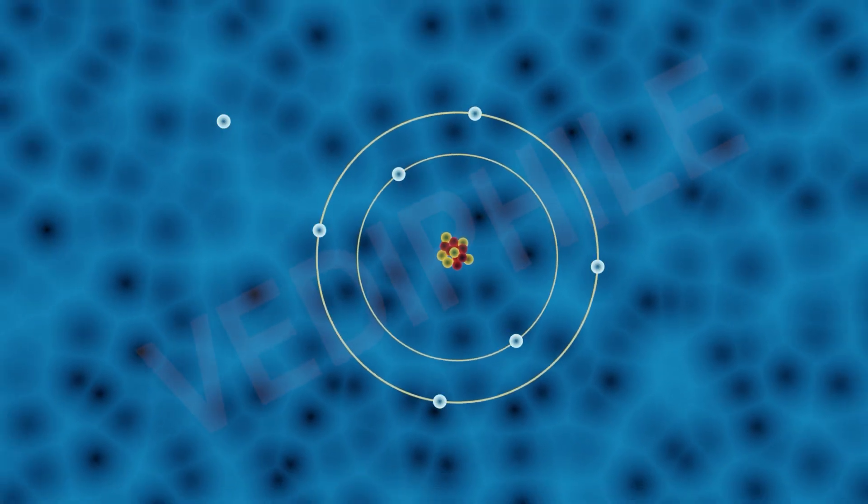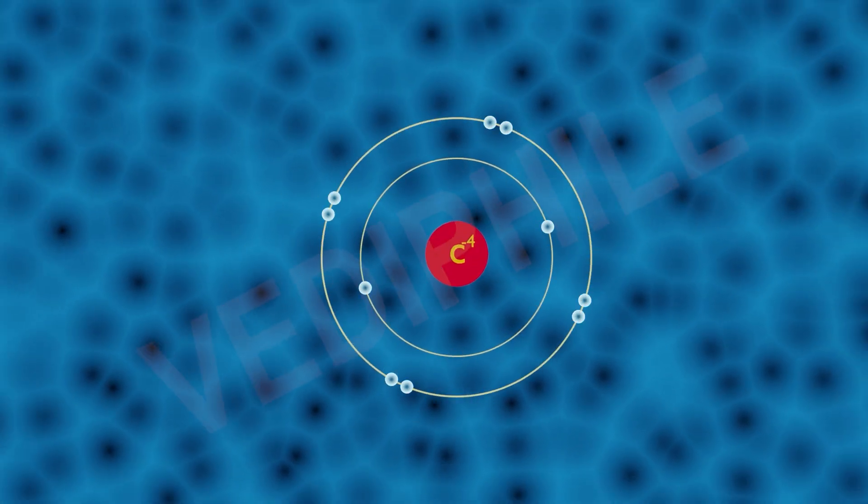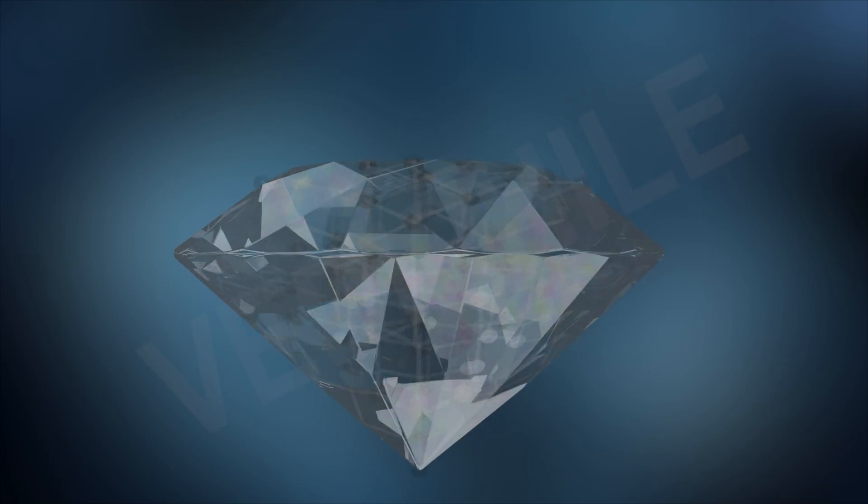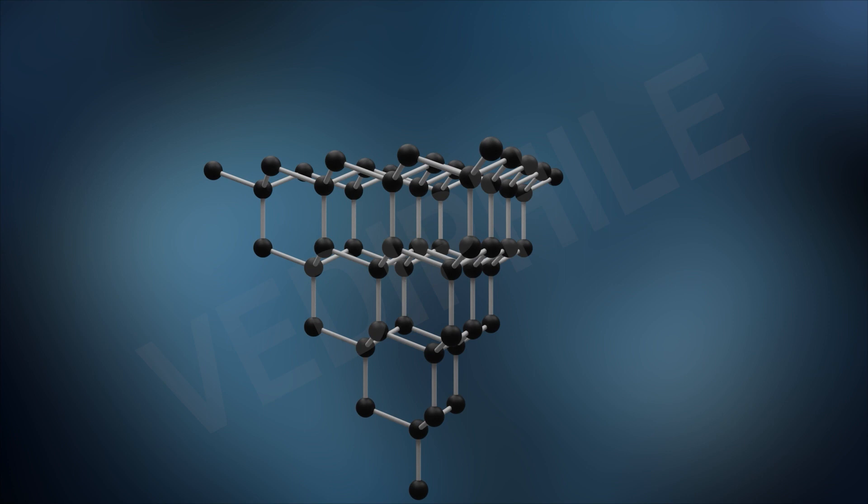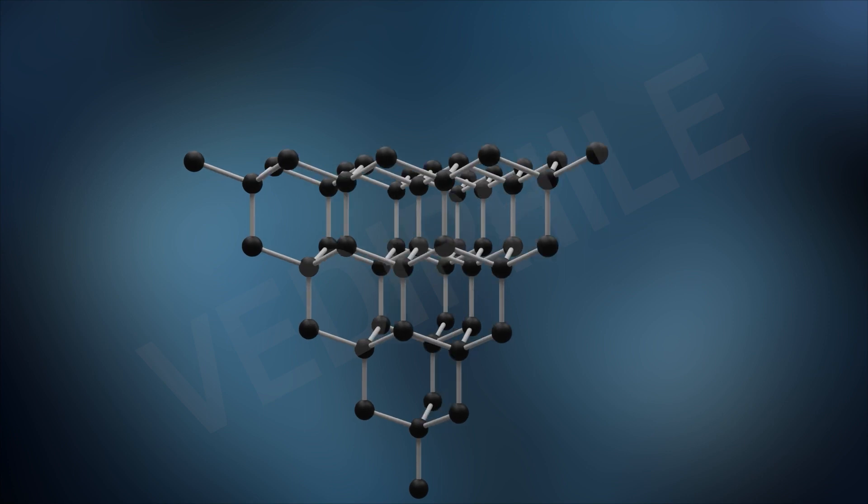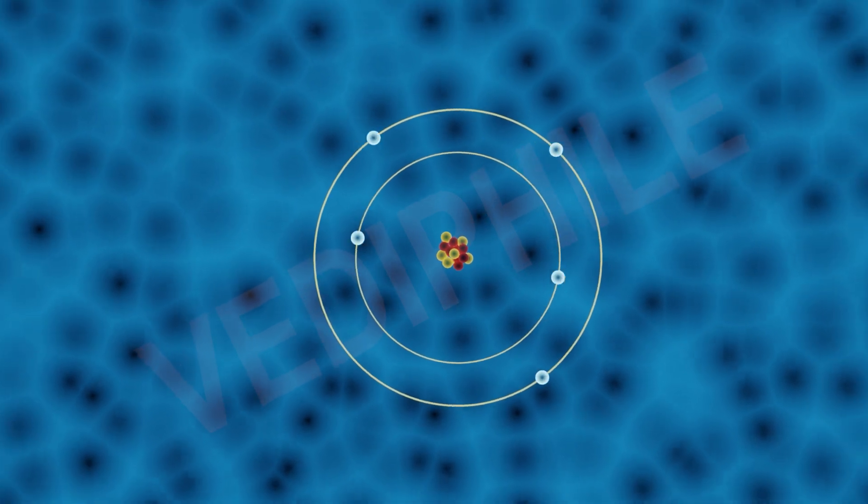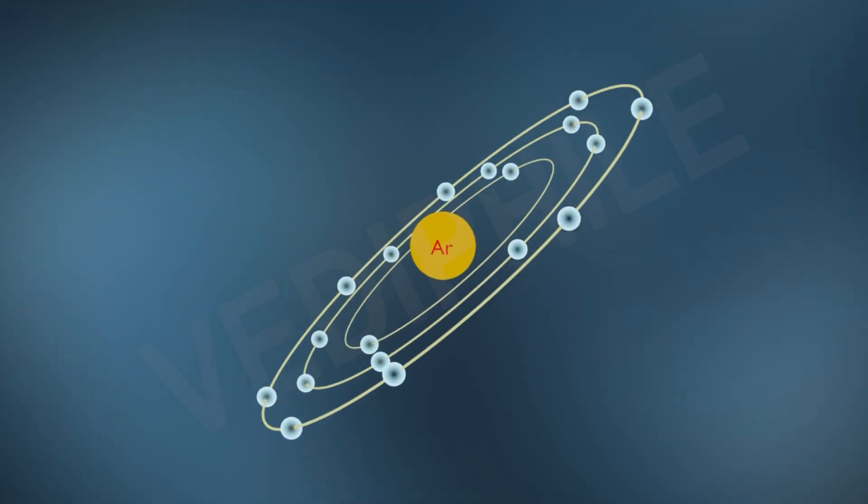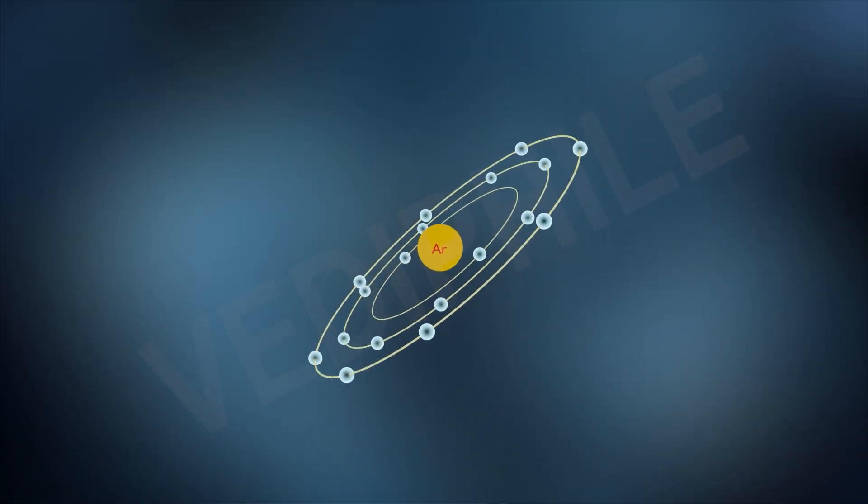So carbon neither loses 4 electrons nor gains 4 electrons. It overcomes this problem by sharing its valence electrons with other atoms of carbon or with atoms of other elements. The shared electrons belong to the outermost shell of both the atoms and lead to both atoms attaining a noble gas configuration.